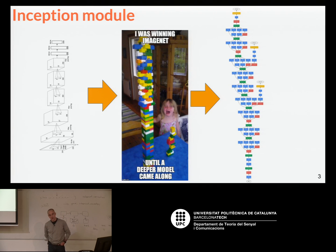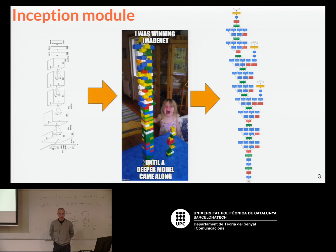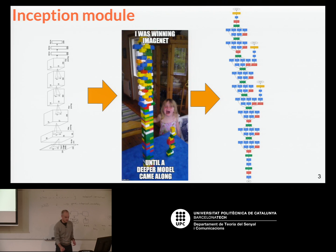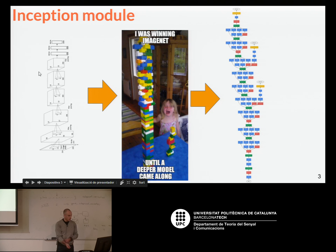If you remember, yesterday I talked about a network called AlexNet, which was a breakthrough in machine learning, especially in computer vision, because it solved the task called ImageNet — just given an image, tell which objects are in the image. The main contribution of that network, which you see here on the left, is that it had several layers.